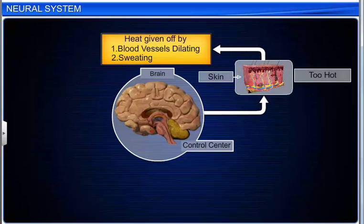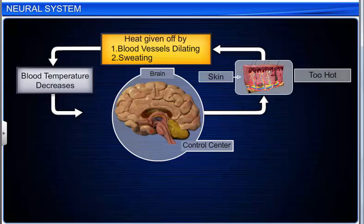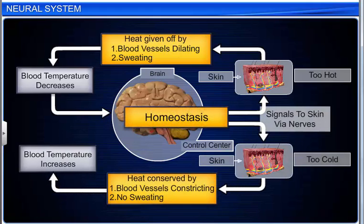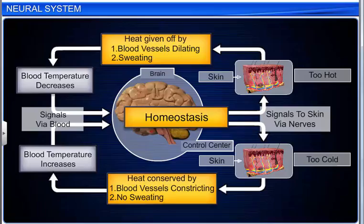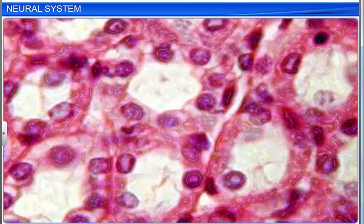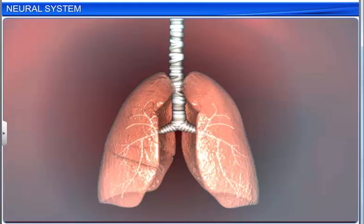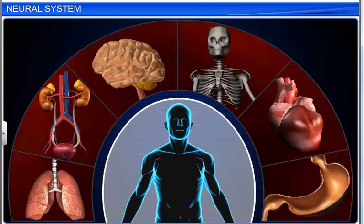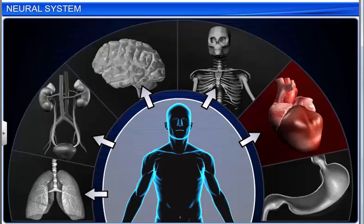Coordination between various organs and systems of the body is crucial to homeostasis, or body stability. The cells form tissues, which in turn form different organs. Organs further combine to form different systems. Each of these organ systems is specialized to perform specific functions and shows interactions and interdependency.